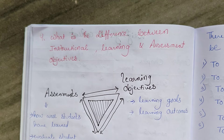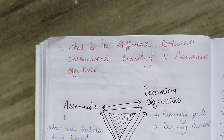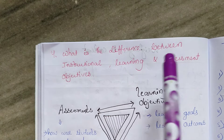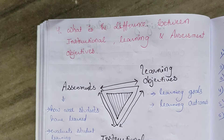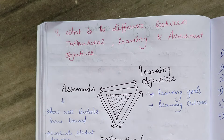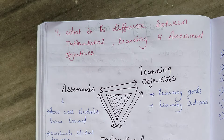We will understand what is instructional objective, learning objective, and assessment objective. Instructional means giving instruction. For example, when you are writing an exam in an exam hall, the invigilator or the teacher will give some instructions to you.